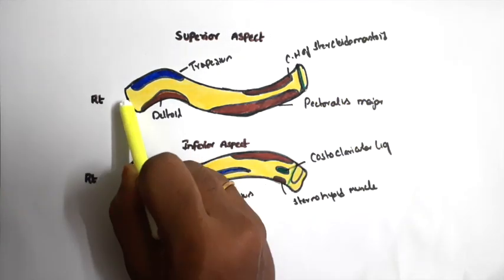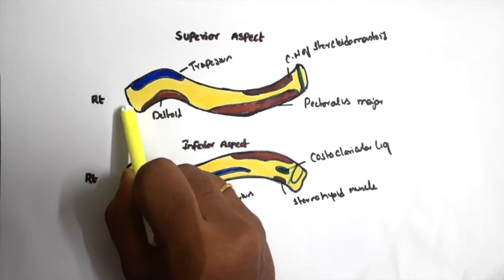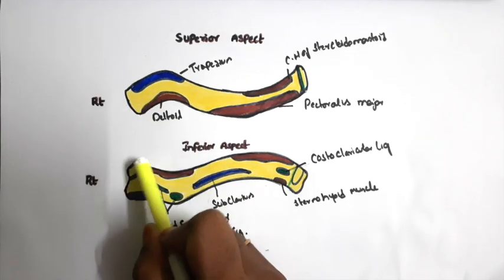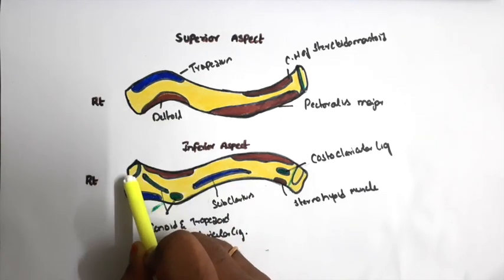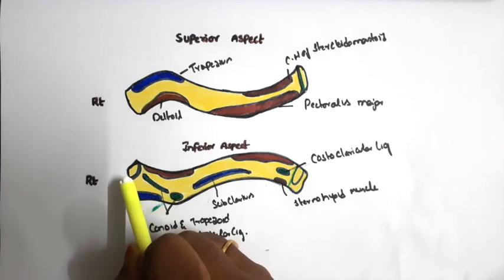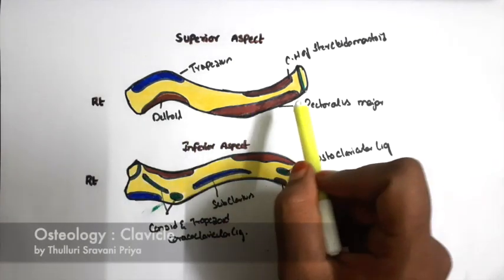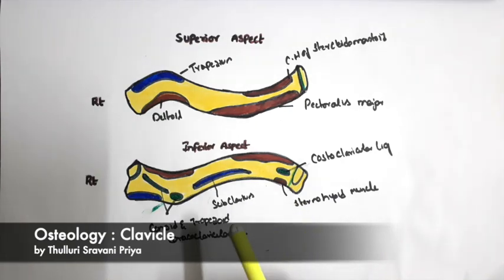Now we will see the acromial end. On this acromial end we see the acromial facet. The margin of this acromial facet is lined by the fibrous capsule, which forms the acromioclavicular joint with the acromial process of the scapula.